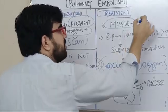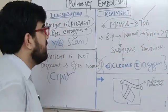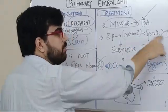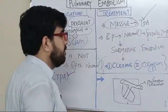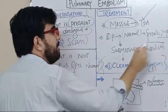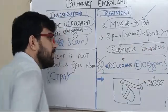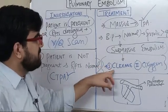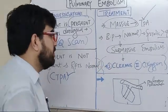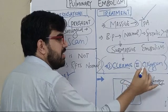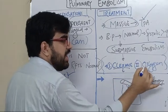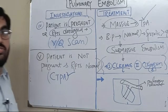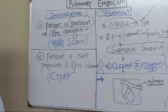If pulmonary embolism is massive — systolic BP less than 90 — give thrombolytics. But if the patient is maintaining BP greater than 90, that is called submassive pulmonary embolism. Treatment of submassive pulmonary embolism is clexane (enoxaparin) in therapeutic doses and oxygen. Give oxygen if the patient is not maintaining oxygen saturation; if saturation is maintained, no need for oxygen.